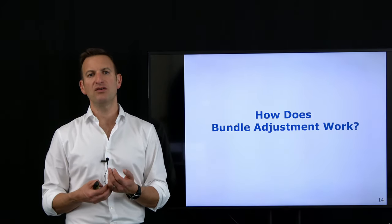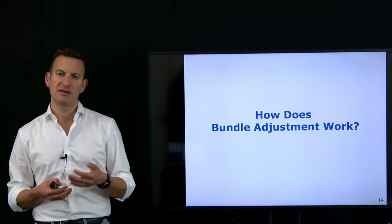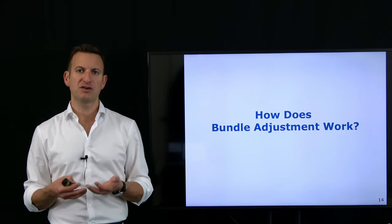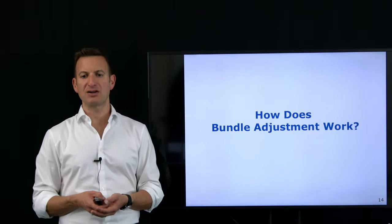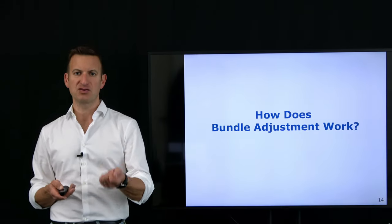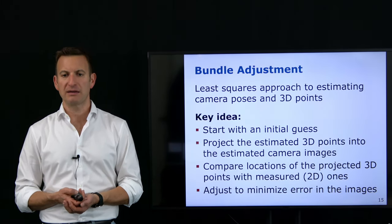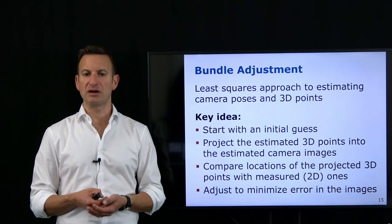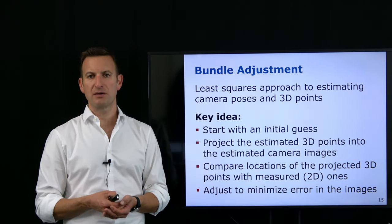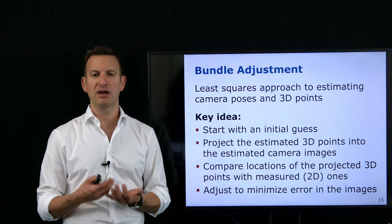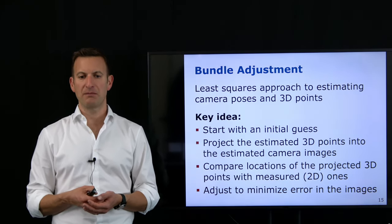For all the features extracted from my image, I want to estimate the 3D location of the object that generated this feature response in the real world. I'm doing this using a nonlinear least squares approach, estimating both the camera poses and the location of the 3D points in the environment simultaneously at the same point in time.